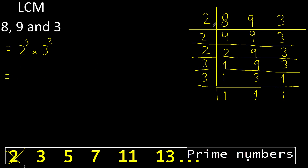Multiplied by 2 is 4, multiplied by 2 is 8. 8 multiplied by 3 is 24, and 24 multiplied by 3.